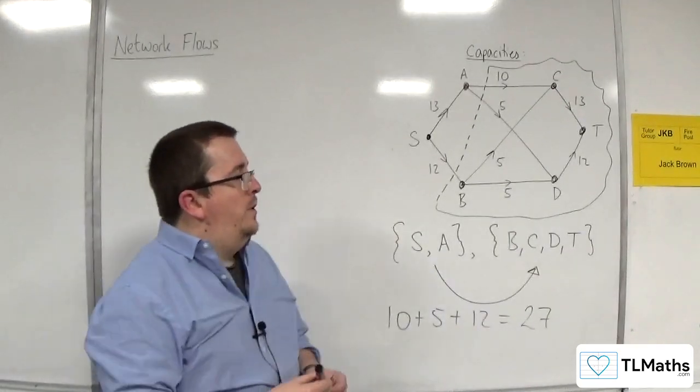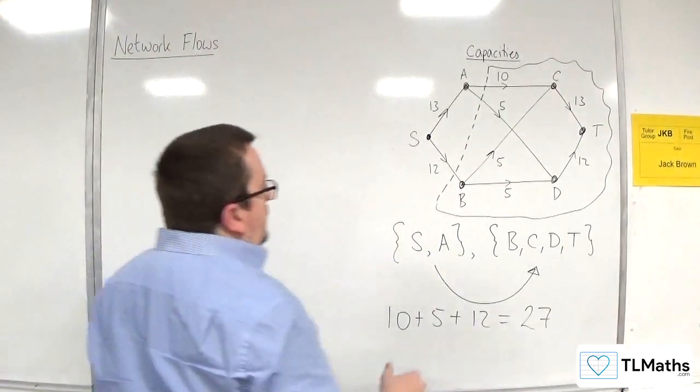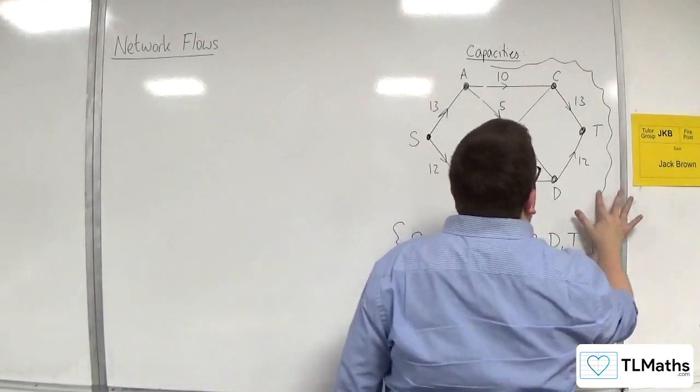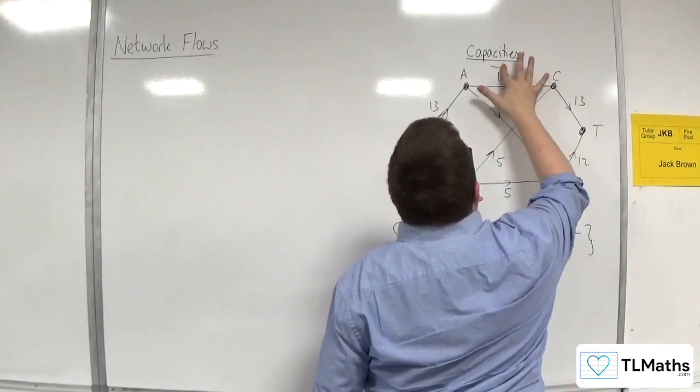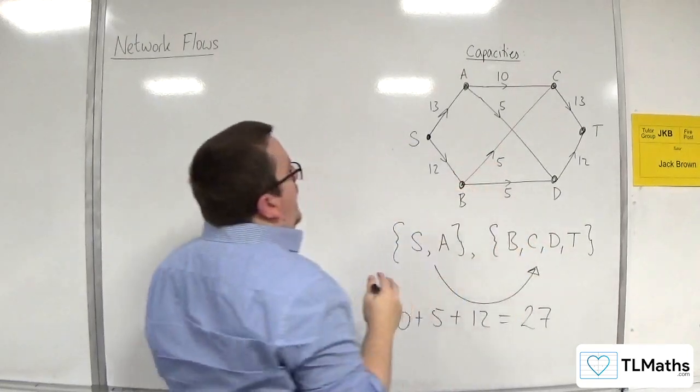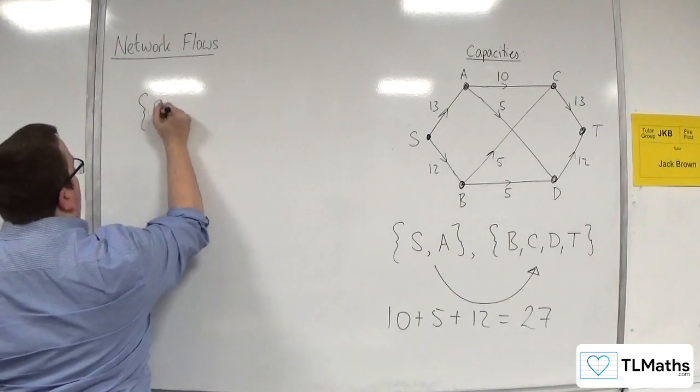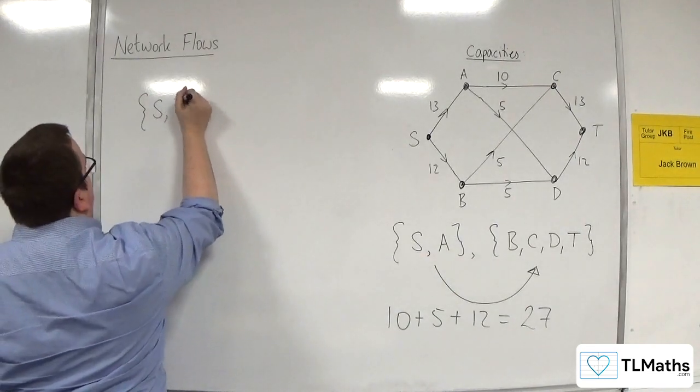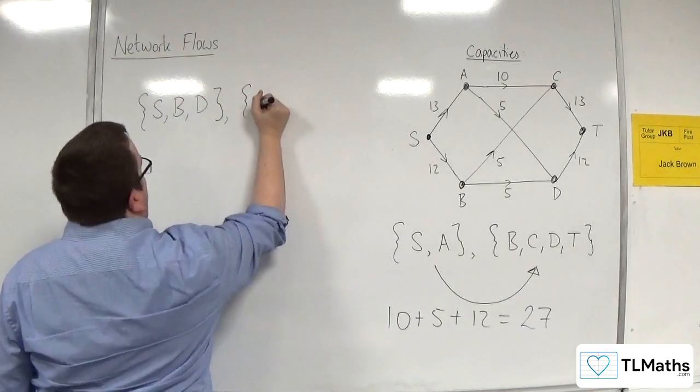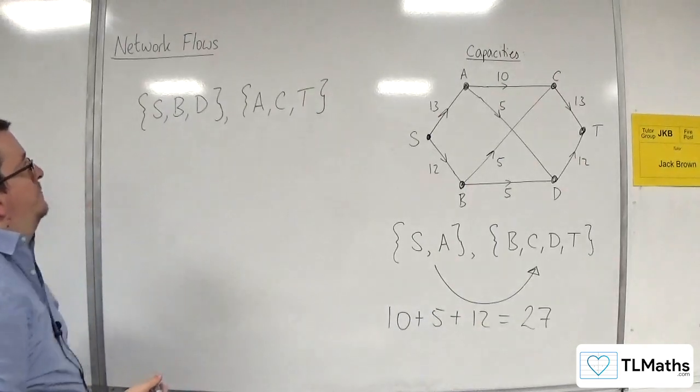So that is what we mean by a cut. And we can make cuts in lots of different ways. So let's just erase that cut. For example, like so. And we can make another cut. Let's say we've got, as another example, S, let's have B and D. And in the other set, we've got A, C and T, for example.